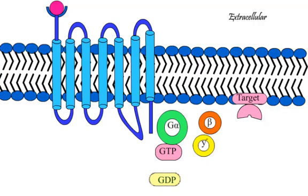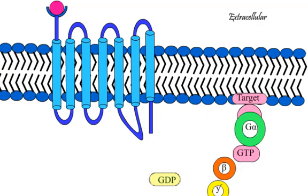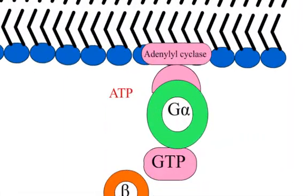This change causes dissociation of the G-protein trimer and release of the alpha subunit with GTP, while beta-gamma subunits remain together as a beta-gamma complex.